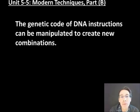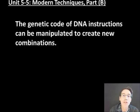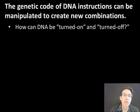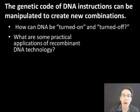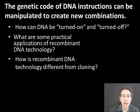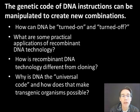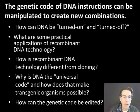Hello everyone, welcome. This is Mr. Dempsey again. Today we're going to be looking at Unit 5-5, Modern Techniques of Biotechnology, Part B. We're going to be exploring the genetic code of DNA instructions and how it can be manipulated to create new combinations. Specifically, we'll be exploring how DNA can be turned on and turned off, what are some practical applications of recombinant DNA technology, how is recombinant DNA technology different from cloning, why is DNA the universal code, and why does that make transgenic organisms possible? And finally, how can the genetic code be edited?